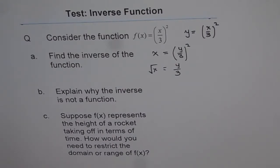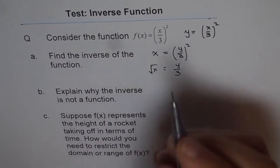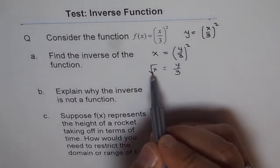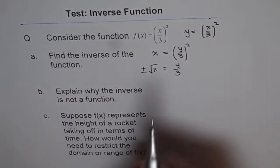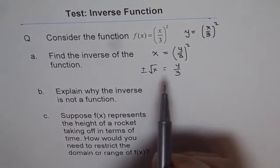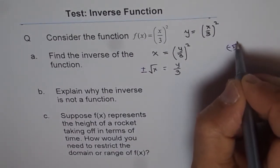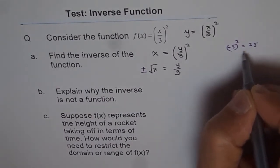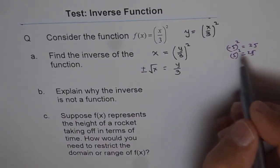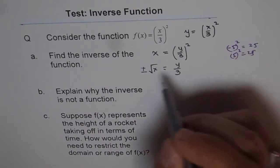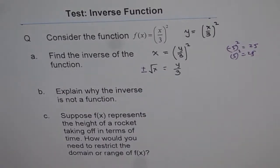Do you know what the mistake is? Remember: whenever you do a square root, you have to write both plus and minus. When we say x equals something squared, let's say that something is −5: (−5)² = 25, and 5² = 25 as well. So if you go backwards, the value could be both plus and minus. Whenever you take a square root, you must write ±. Watch my video on square root of a square to understand this in detail.